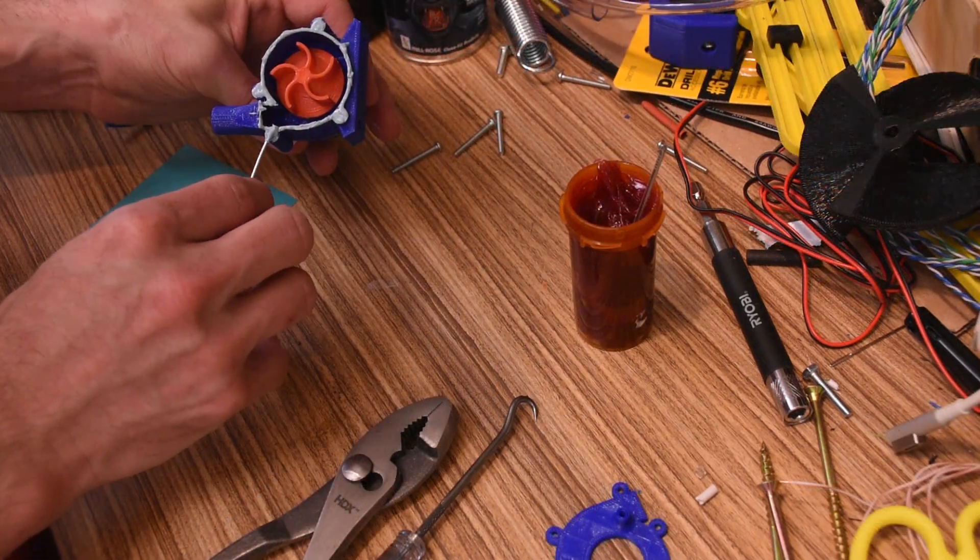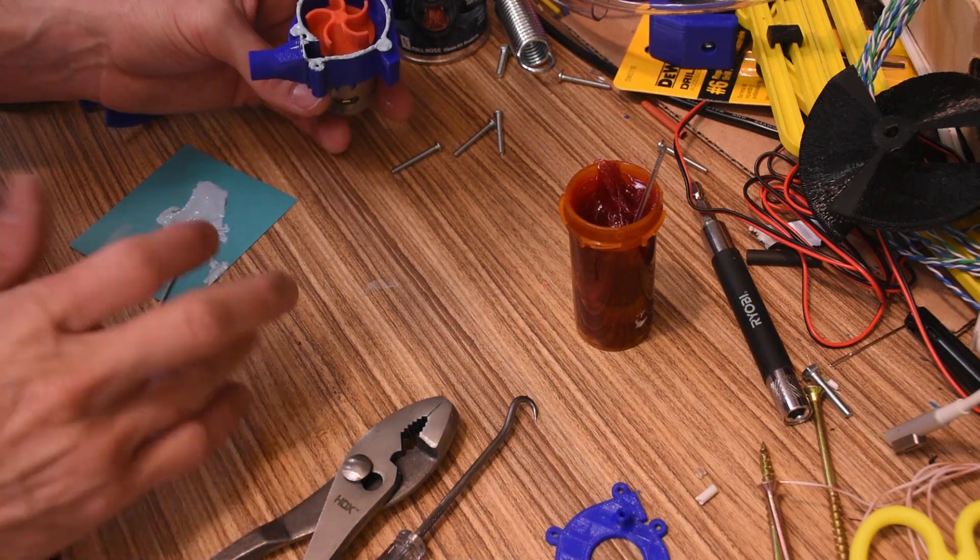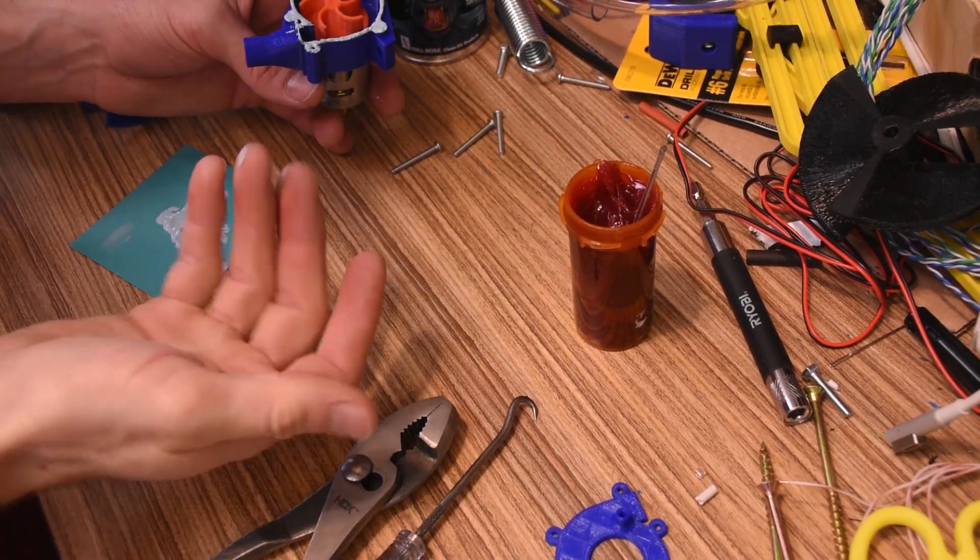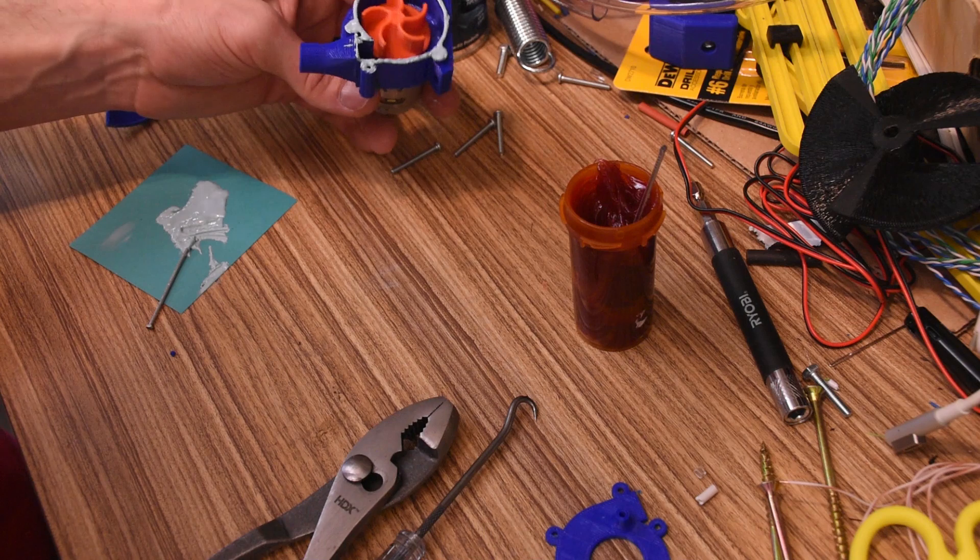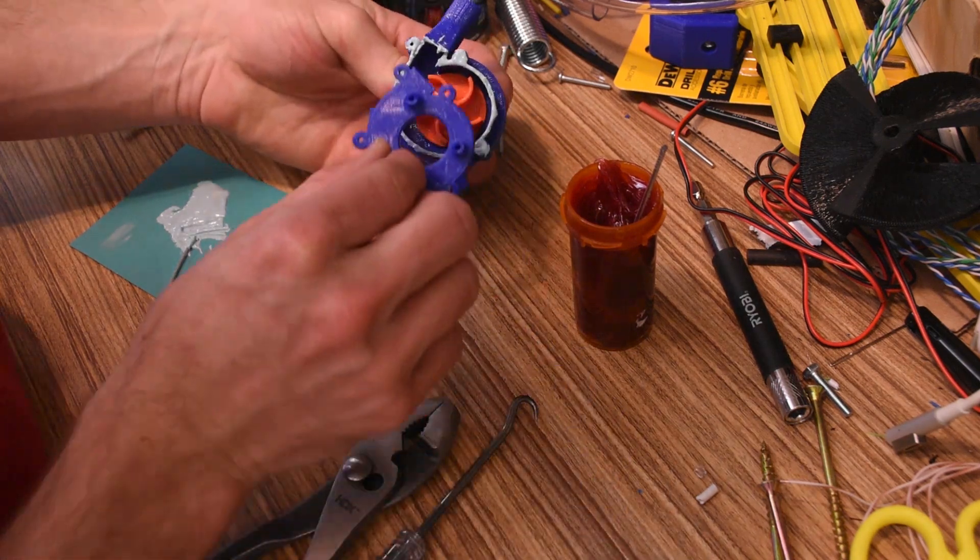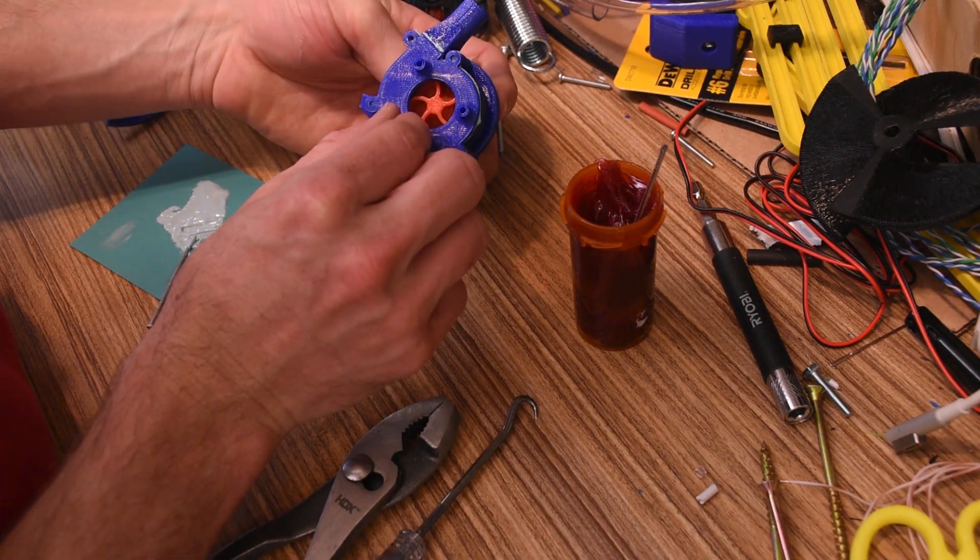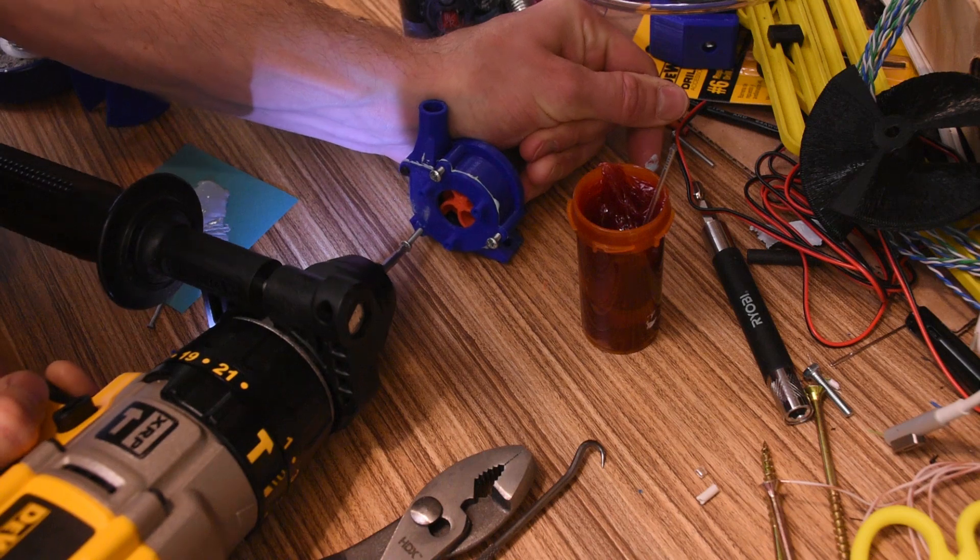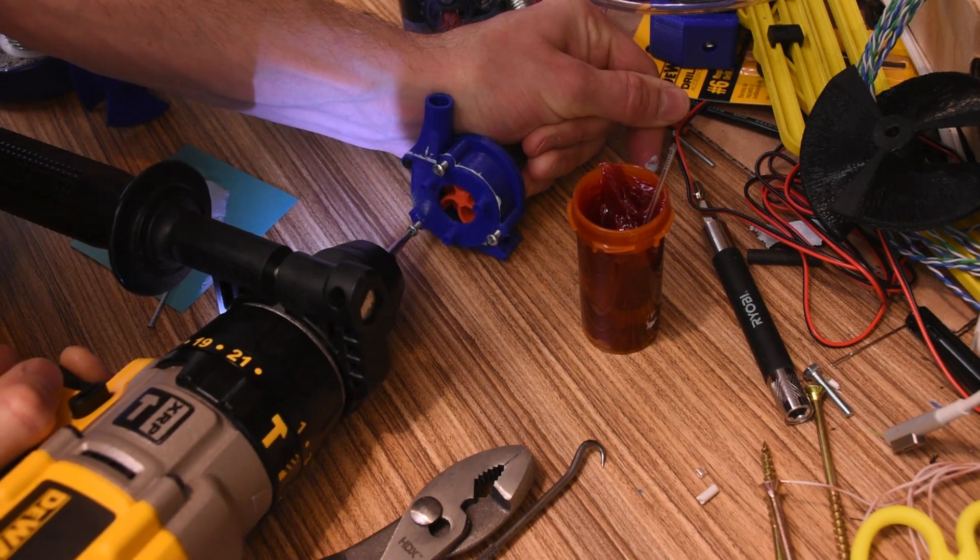To seal the impeller cover, I used some Blue Monster thread sealant, but I've also used grease with great success. It doesn't really matter for this part anyway. Now anytime I'm spinning one 3D part inside another, I never go less than 20 thousandths of clearance between the two.